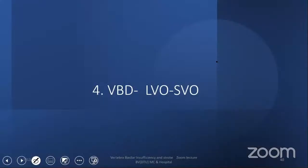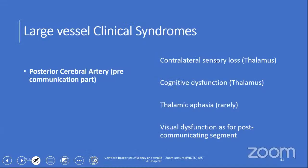The HINTS exam is very important. Looking at vertebrobasilar deficiency, large vessel occlusion, and small vessel occlusion presentation: if you look at the pre-communicating part of the PCA, there will be contralateral sensory loss due to thalamus involvement, cognitive dysfunction, thalamic aphasia, and visual dysfunction. In the post-communicating segment, we again review the posterior artery territory features.